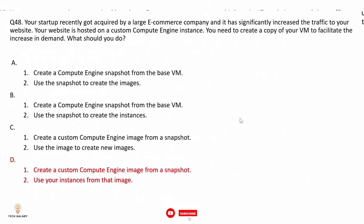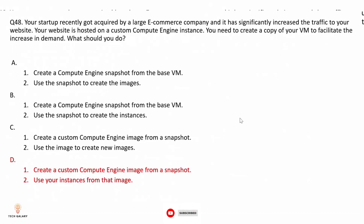Option D: create a custom Compute Engine image from a snapshot, then use your instances from that image. This is correct because a custom image belongs only to your project and serves as a template to create new VM instances. An image is used to create instances with the same configuration, while snapshots are used to create new disks or restore existing ones. So option D is the correct answer.